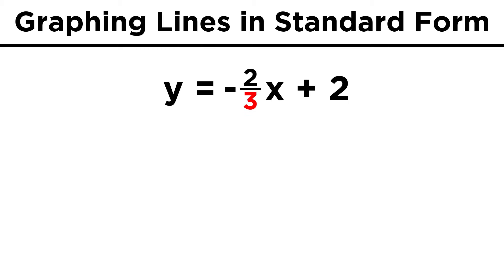So the first thing we would do is multiply everything by three. That gives us three y equals negative two x plus six. Then we could add two x to both sides to get two x plus three y equals six.